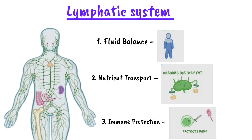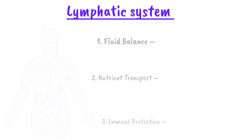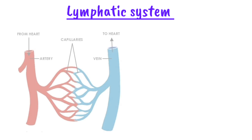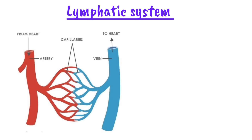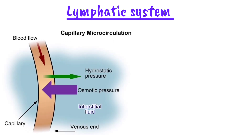Where does the lymph come from? To understand lymph, let us first look into blood circulation. Blood is constantly moving through the arteries, veins and capillaries. The arteries carry oxygen-rich blood from the heart to the body, while the veins bring poorly oxygenated blood back to the heart. The smallest vessels are called capillaries and they have thin walls that allow fluid, nutrients and gases to pass through.